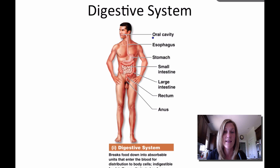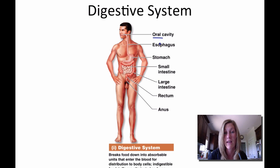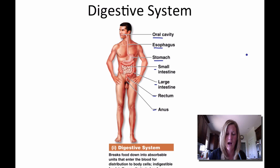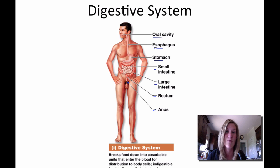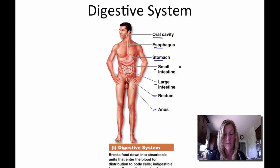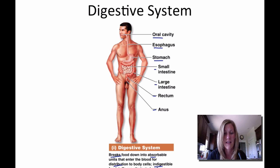The digestive system starts with the oral cavity. Its purpose is to break down foodstuff into smaller materials so the body can absorb the nutrient values. It includes the esophagus, stomach, small intestine, large intestine, rectum, and anus, plus several accessory organs such as the teeth and liver. The digestive system also gets rid of indigestible foodstuff, which is eliminated as feces.